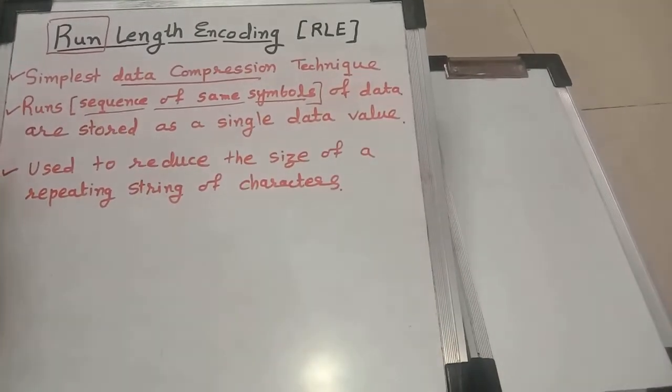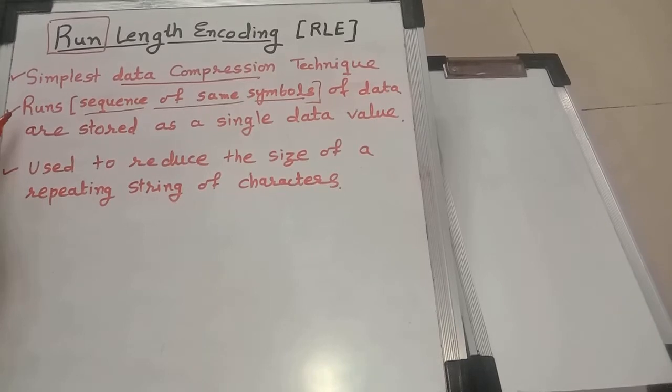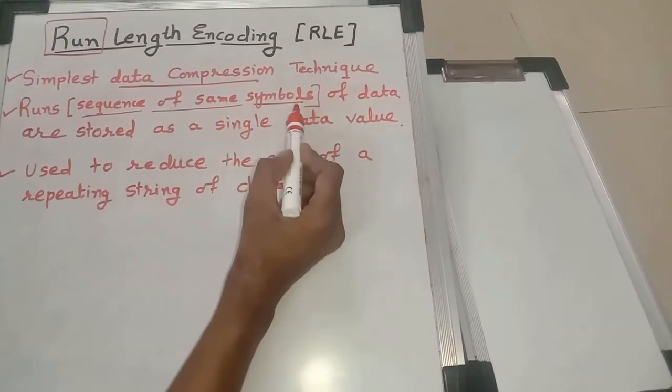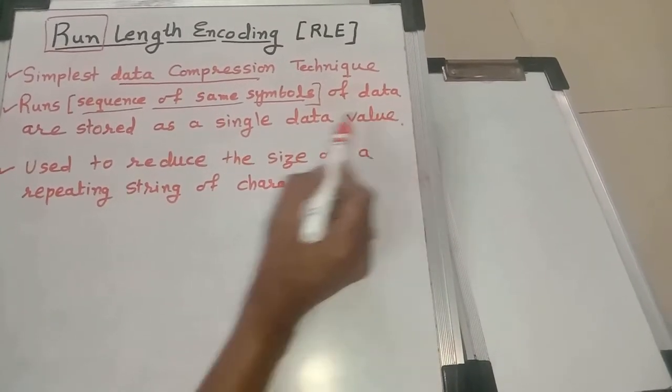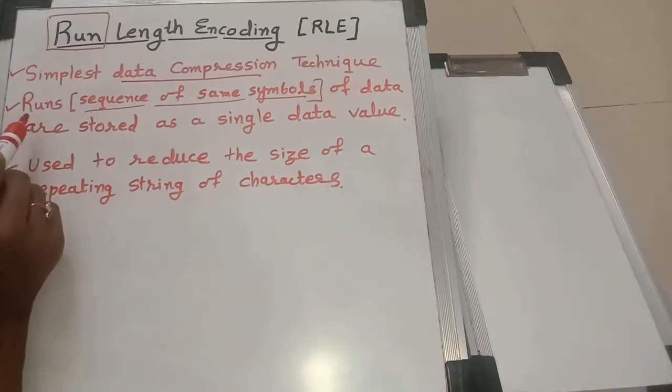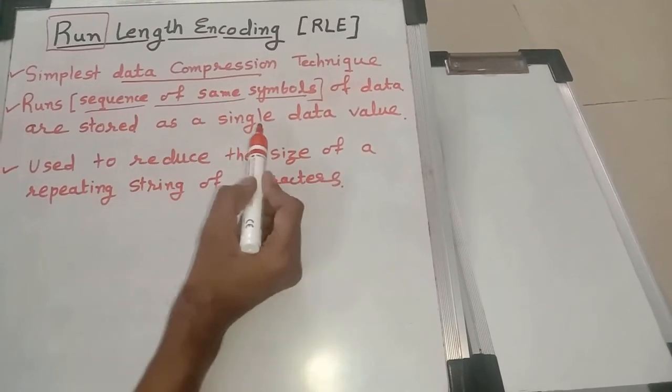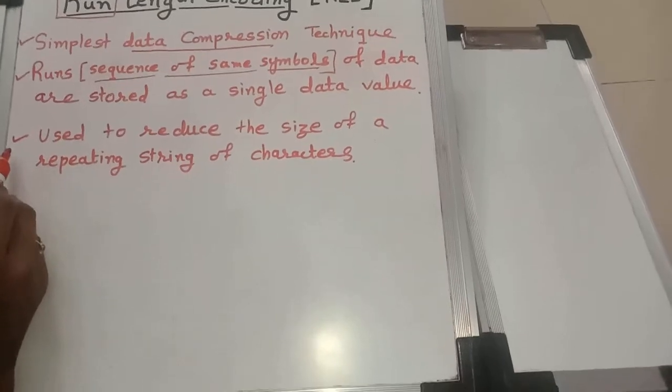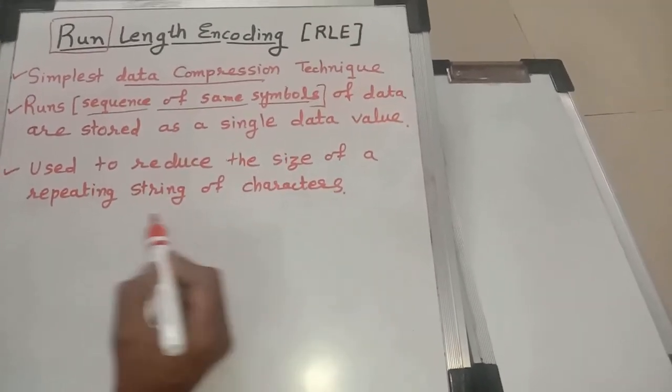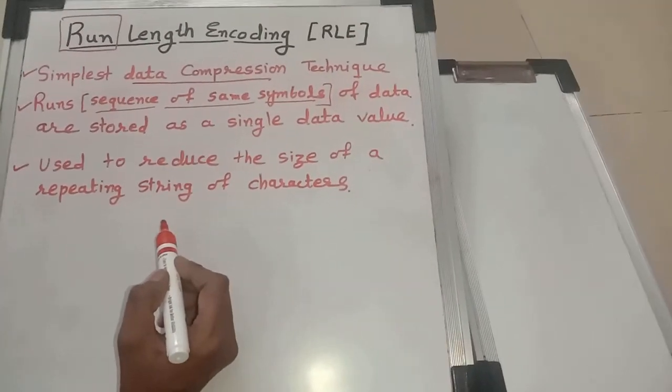In RLE, that is run length encoding, sequence of same symbols of data (that is runs) are stored as a single data value. This technique is used to reduce the size of repeating string of characters.